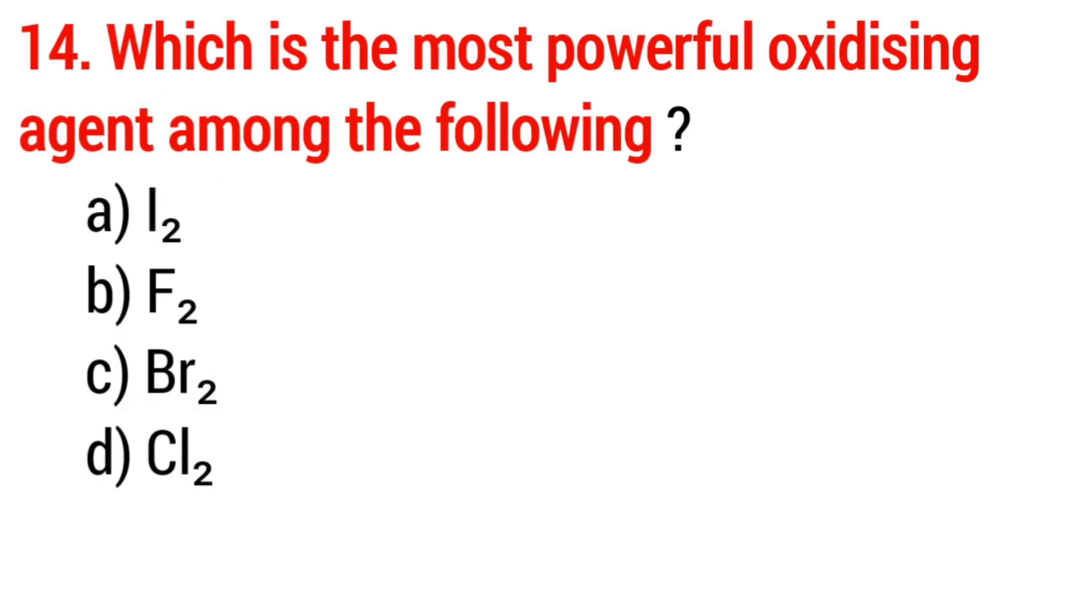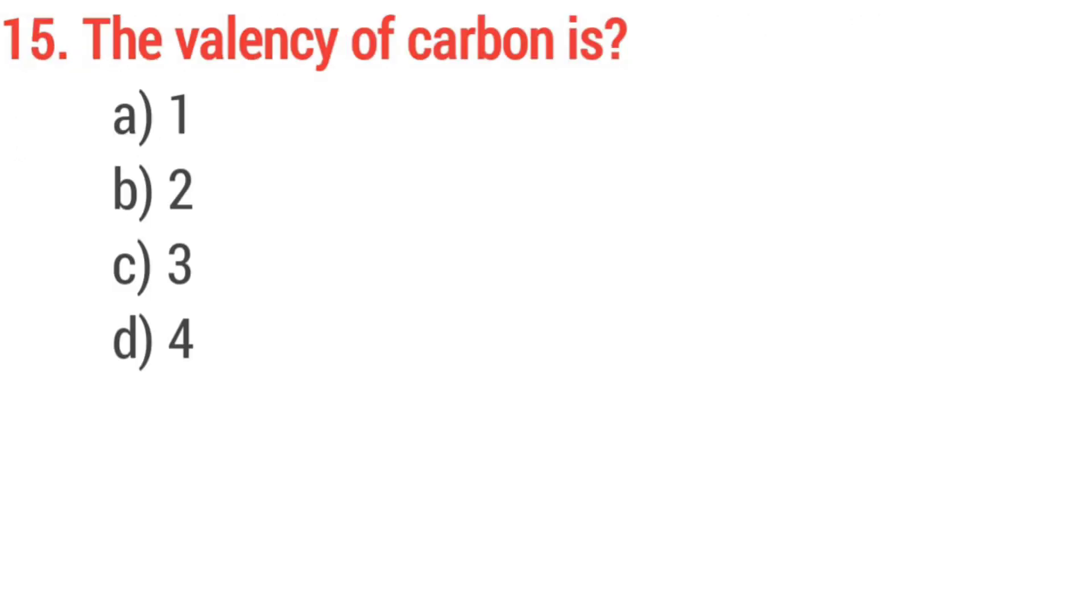Question number 14, who is the most powerful oxidizing agent among the flowing? Answer option B, F2. Question number 15, the balance of carbon is? Answer option D, 4.